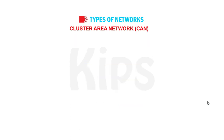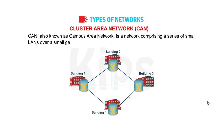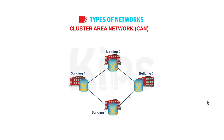Campus Area Network, CAN. CAN, also known as Campus Area Network, is a network comprising a series of small LANs over a small geographical area, such as a college campus. This network covers an area smaller than WAN.